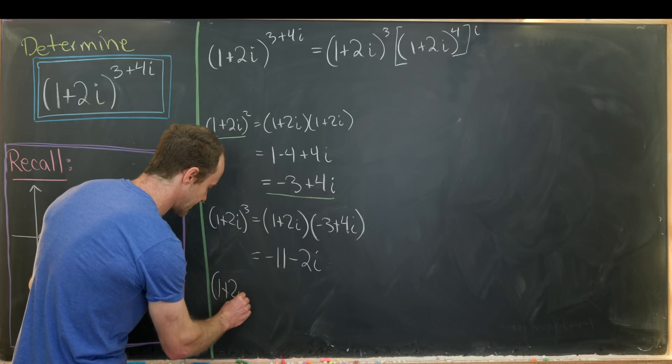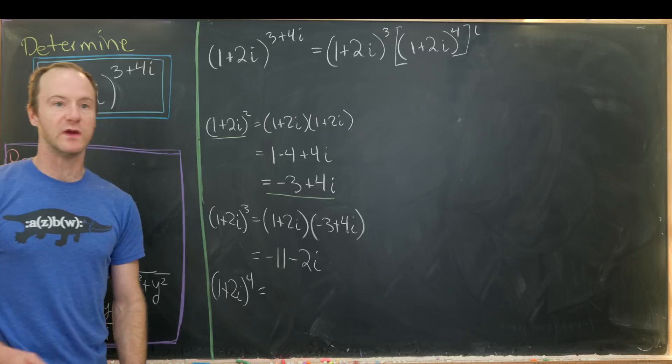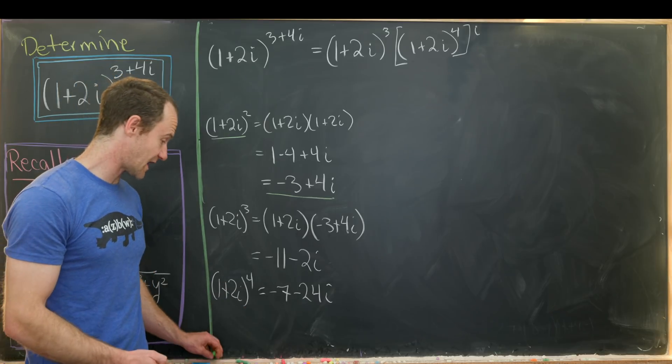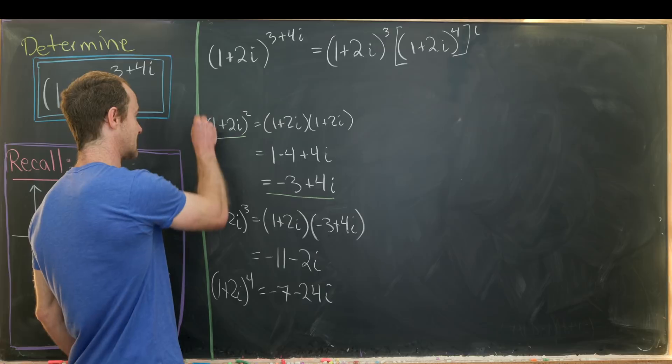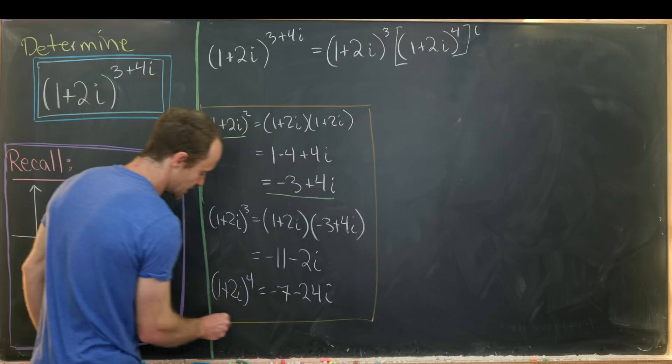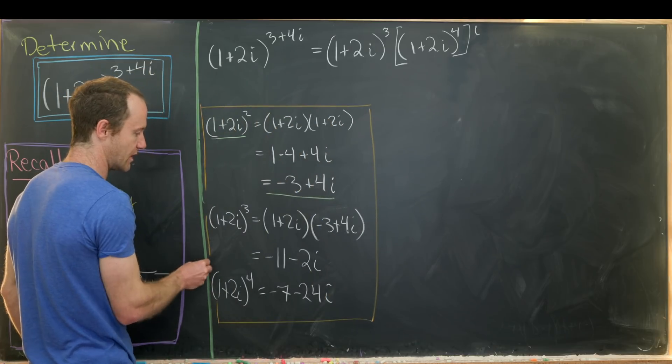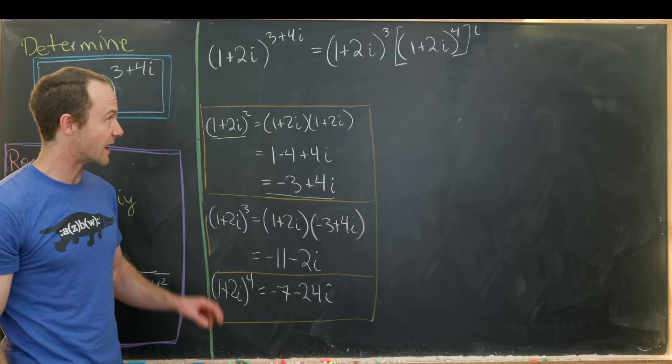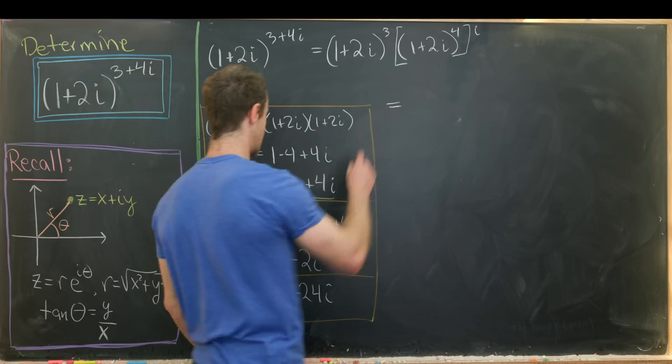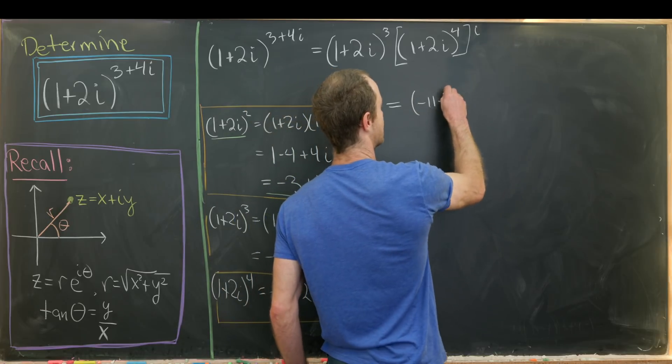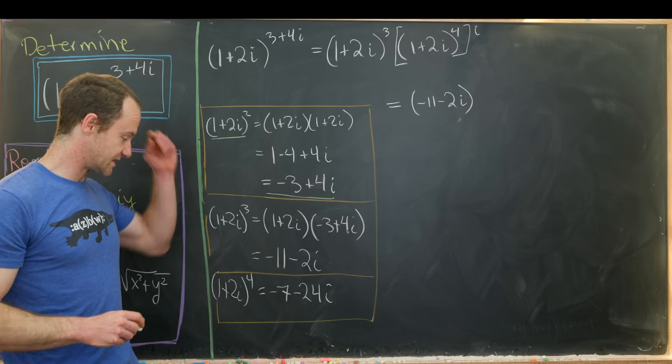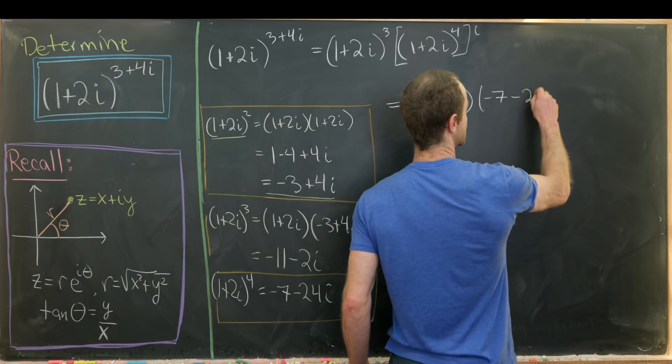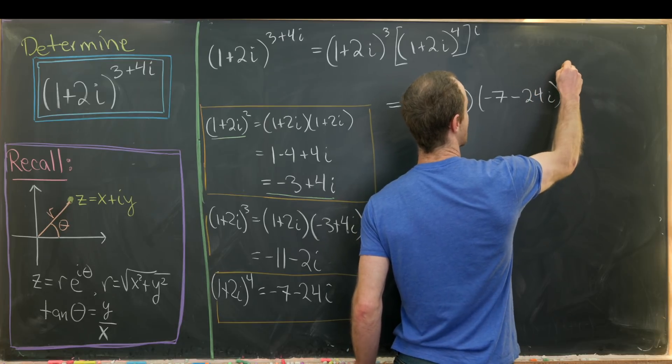And then finally, for 1 plus 2i to the fourth power, we in fact get negative 7 minus 24i. So I obviously didn't work out the details for that, but they follow exactly the same as the calculations that we just made. So now we have enough powers of this number 1 plus 2i to do a couple more steps at least. So we can take this 1 plus 2i cubed and rewrite it as negative 11 minus 2i. And then we can take this 1 plus 2i to the fourth. And that'll be negative 7 minus 24i. And then we're raising that to the i-th power.